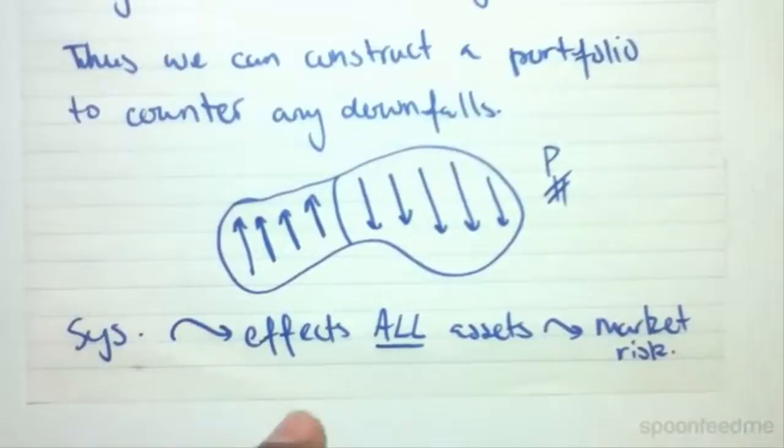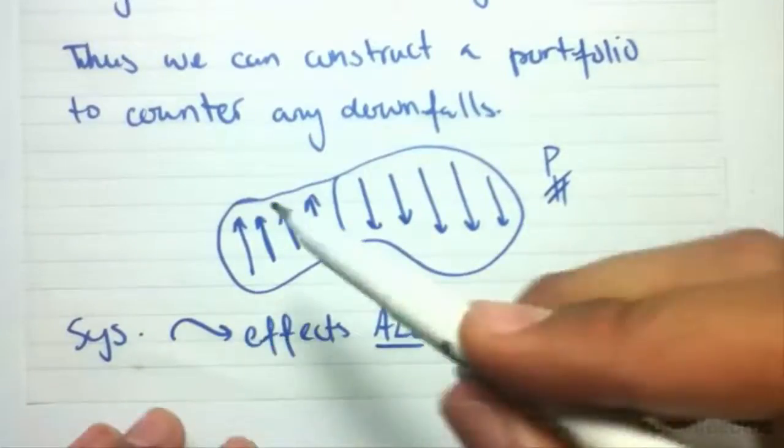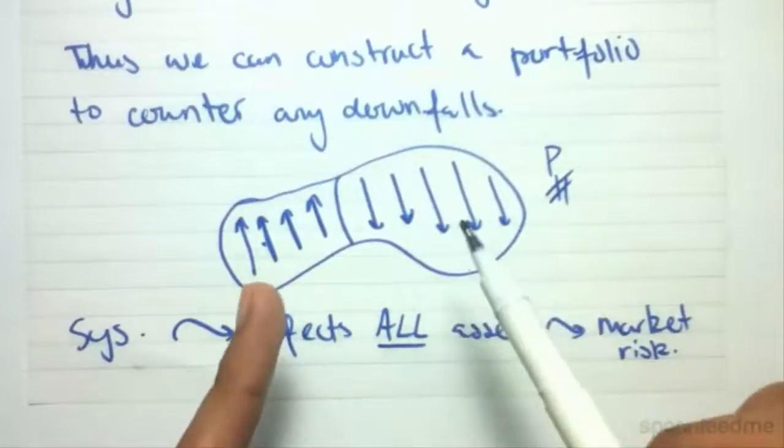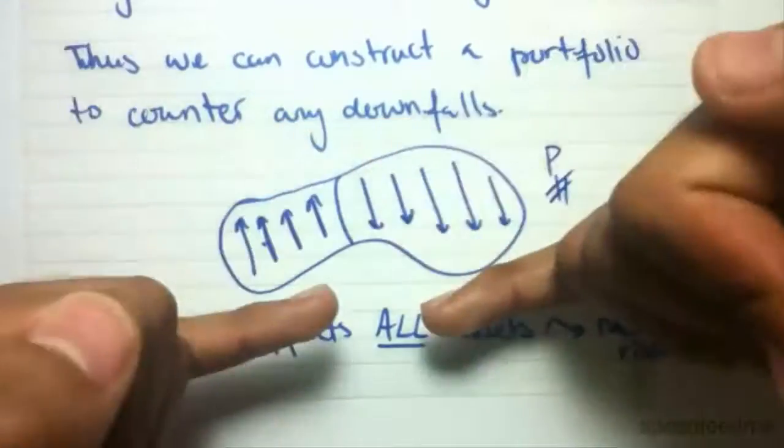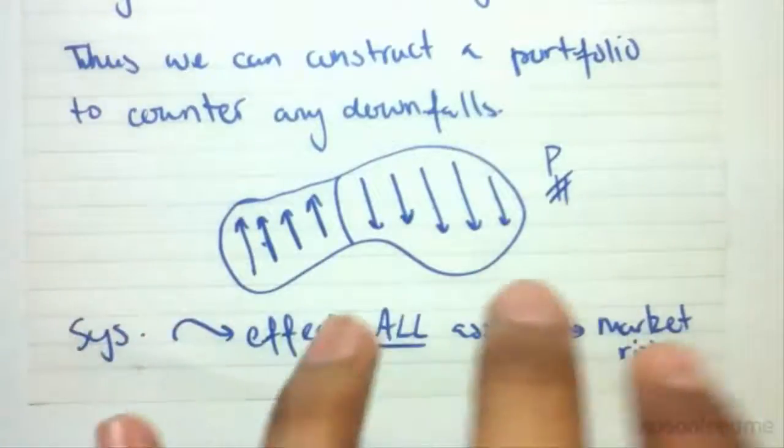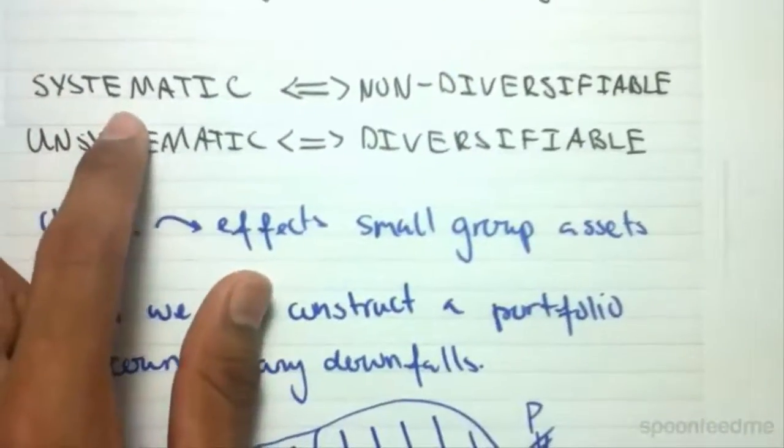So no matter what you do, no matter what you compose your portfolio of, every single asset here, like let's say these two for example, both of these are going to experience that risk. Both of them, every possible asset in the market is going to be hit, is going to be struck by this plague of systematic risk.